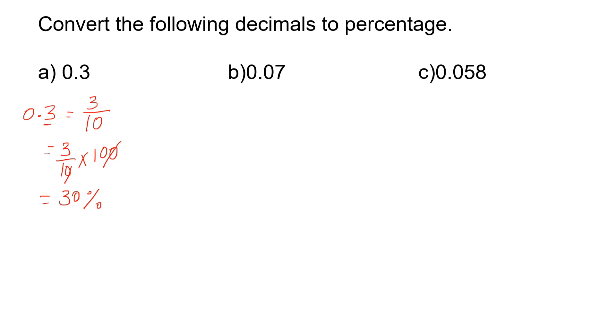Next, similarly, 0.07. Here two place values are there, that is 10s and 100s. So 0.07 is out of 100s which means 7 by 100. Next, 7 by 100 needs to be multiplied by 100. So you will be left with 7%. 7 one time is 7 itself. So 0.07 is nothing but 7%.